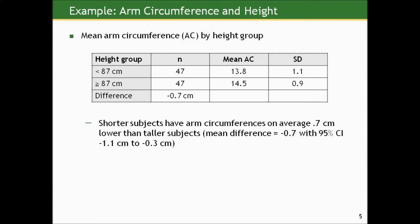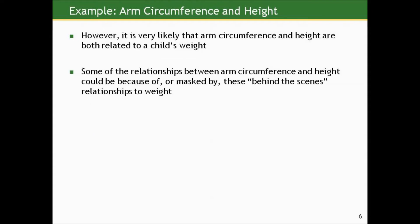If we try to summarize this through one single numerical measure of association, we're comparing a continuous measure — arm circumference — across two groups, so we calculate the mean difference. The mean arm circumference for the group below the median height was 13.8 centimeters, compared to 14.5 for the group above the median height. This is a mean difference of negative 0.7 centimeters for the shorter group compared to the taller, with a 95% confidence interval from negative 1.1 to negative 0.3 centimeters. This result is statistically significant at the 0.05 level, as the confidence interval does not include zero.